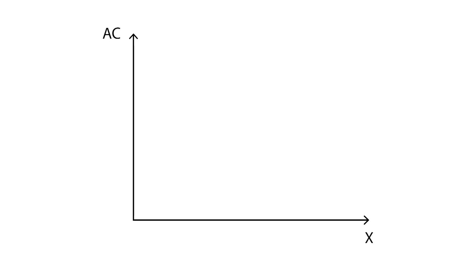Let's say that for a level of output production such as x1, the firm has an average cost equal to AC1.